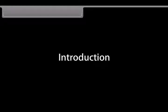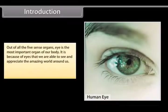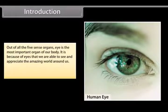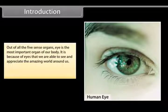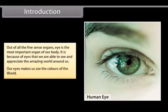Out of all the five sense organs, the eye is the most important organ of our body. It is because of eyes that we are able to see and appreciate the amazing world around us. Our eyes make us see the colors of the world.